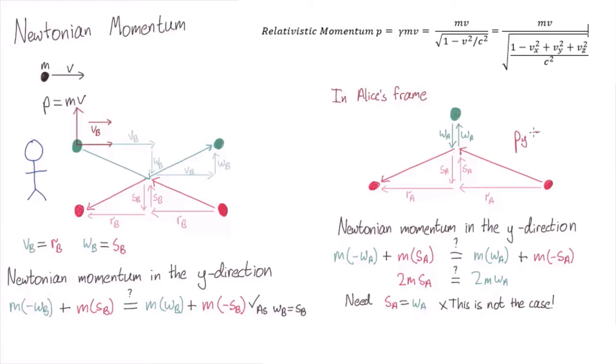For the pink particle, its initial momentum is m times sA over √(1 - (sA² + rA²)/c²). For the green particle, its initial momentum in the y-direction is m times minus wA over √(1 - wA²/c²).